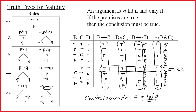Using the table method is in some ways very simple, but tables have some drawbacks. This argument had just three sentence letters and yet needed eight rows. Four sentence letters requires 16 rows, five sentence letters requires 32 rows, and so on. The truth tree method is much more efficient — typically it doesn't matter how many sentence letters you have; the tree is generally pretty manageable. So the tree method offers real advantages over the table method.